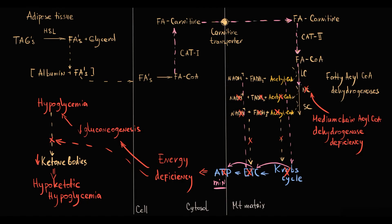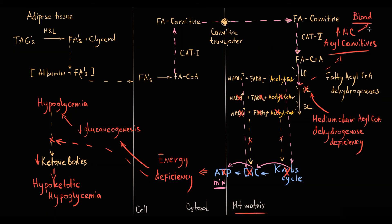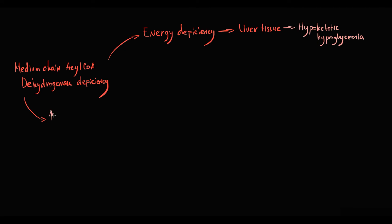Also, because fatty acids can be degraded only to a medium-chain, this results in accumulation of medium-chain fatty acids initially inside the mitochondrial matrix, then inside the cell, and finally in the blood. So the signature feature of medium-chain acyl-CoA dehydrogenase deficiency is accumulation of medium-chain acyl-carnitines in the tissues and in the blood.